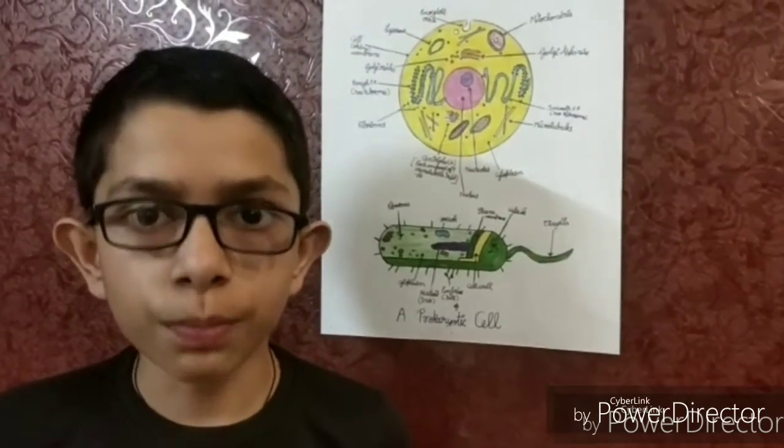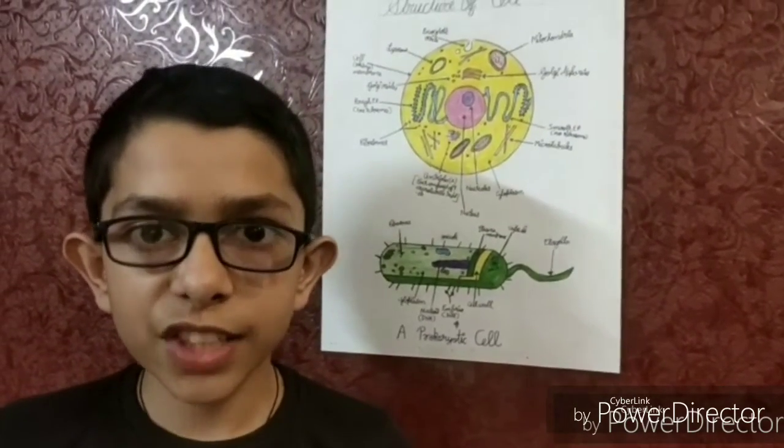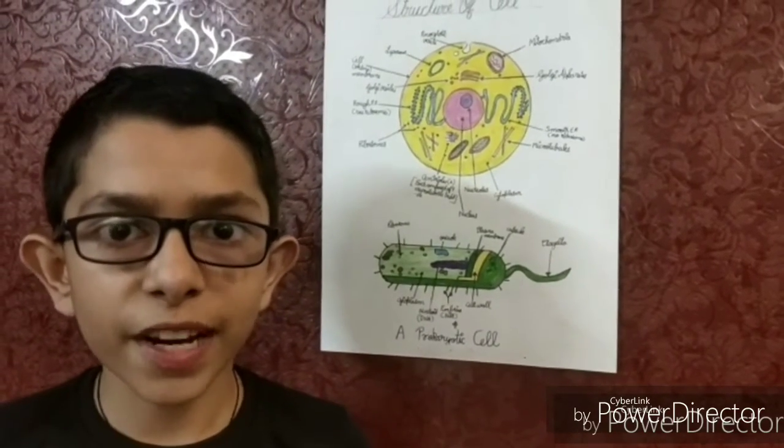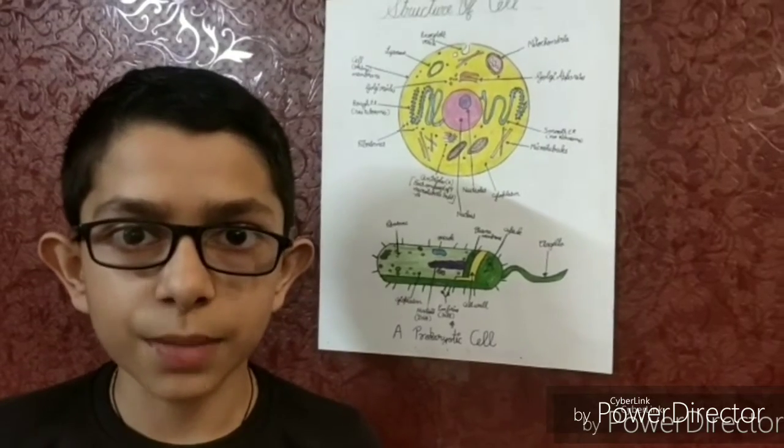The next one is the lysosome. It consists of digestive enzymes manufactured in the RER. They are also known as the suicide bags or the waste disposal systems of the cells.